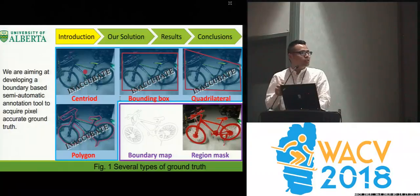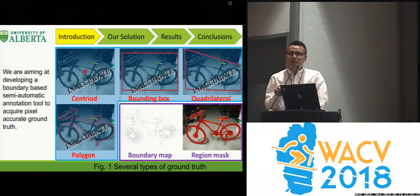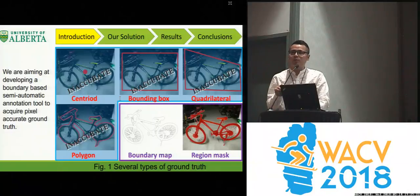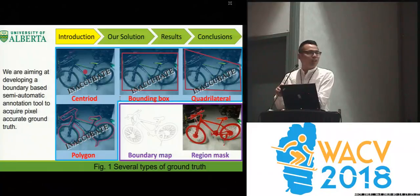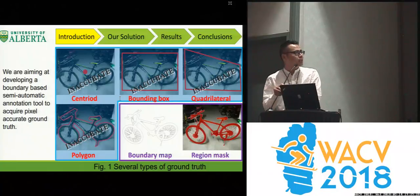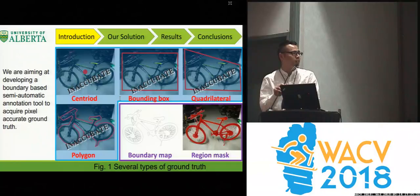Image annotation and visual tracking require annotated image and video ground truth, which are essential for performance evaluation and validation. Different annotation tools have been developed for annotating, such as centroid, bounding box, quadrilateral, and polygon.